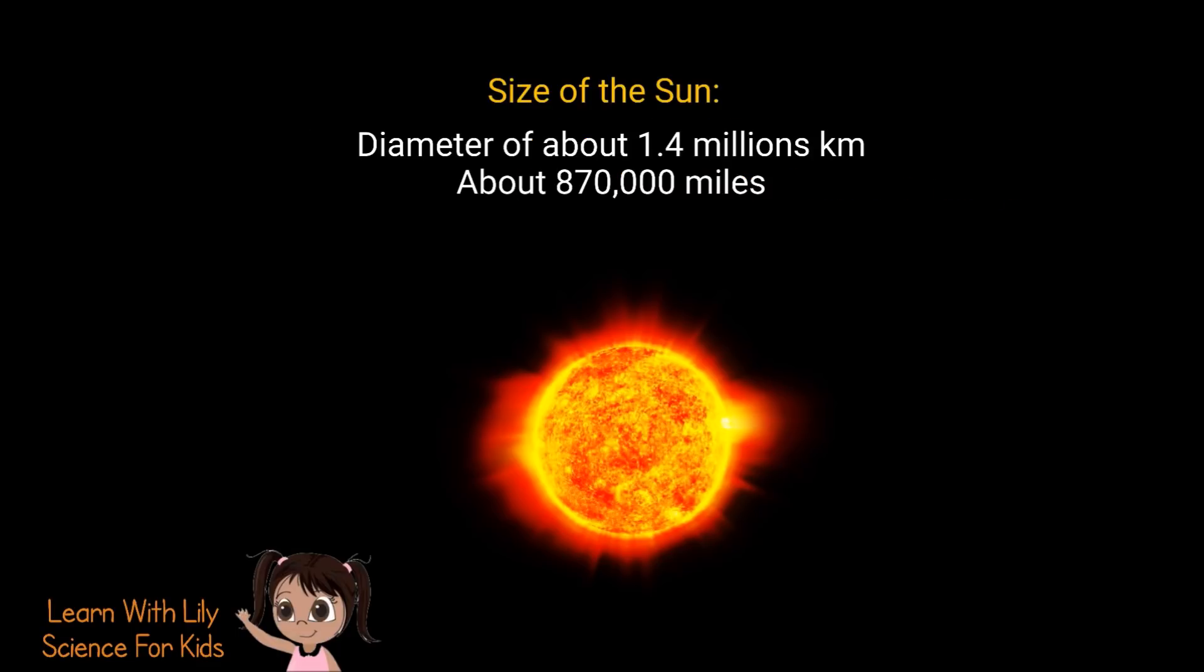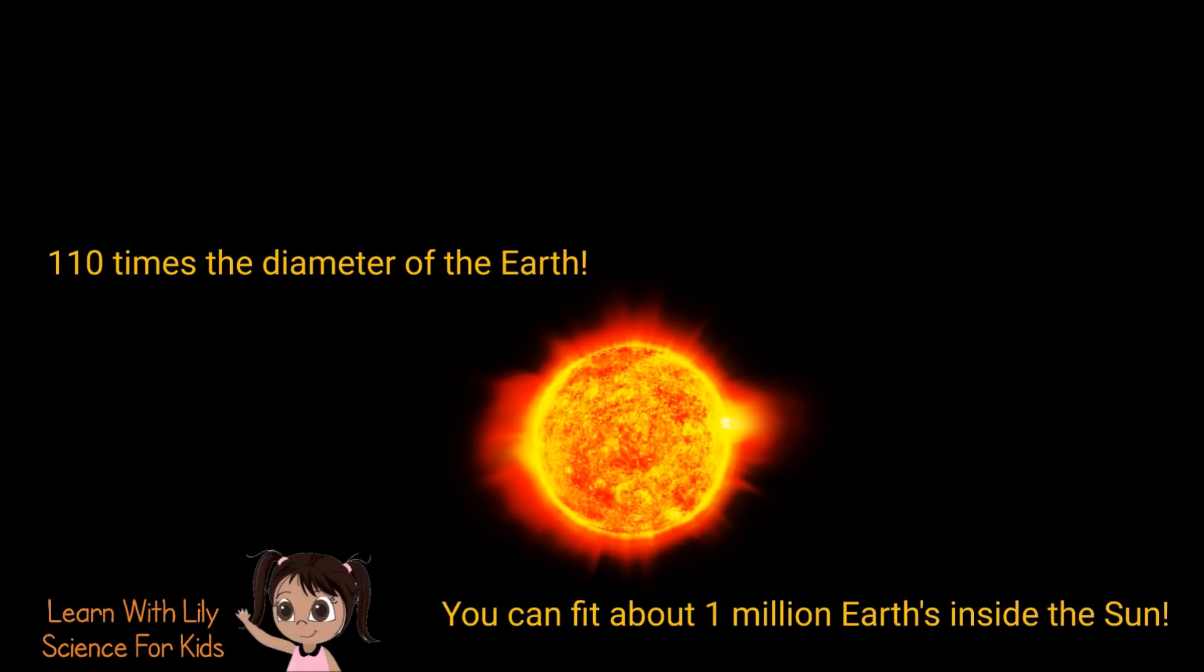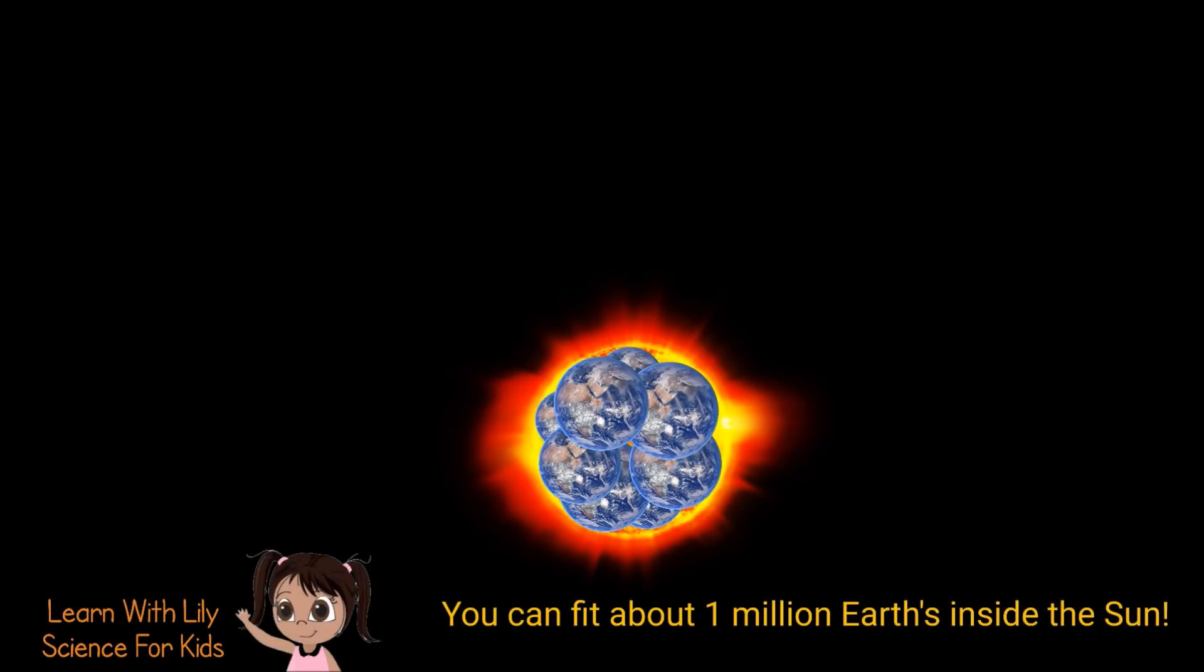How large is the Sun? Well, it has a diameter of about 1.4 million kilometers. That's like 870,000 miles! Yep, you can fit about 1 million Earths inside the Sun.